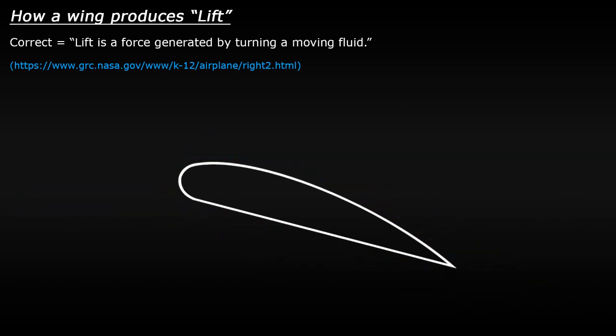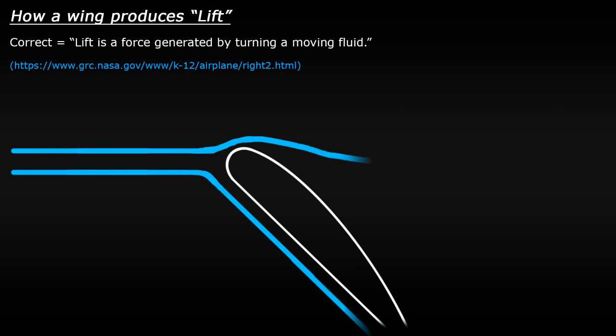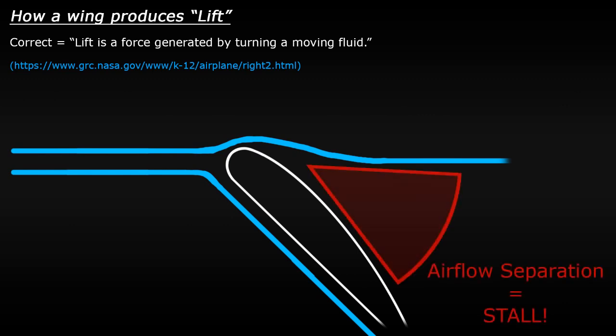Now, there is a danger to increasing the angle of attack. If you increase that angle too much, there will come a point where the airflow cannot turn and follow the top of the wing. When this happens, the airflow will separate from the top of the wing. This is what happens when an aircraft stalls. There is no steady flow of air over the wing, therefore the wing stops producing lift and the plane begins to literally fall out of the sky.